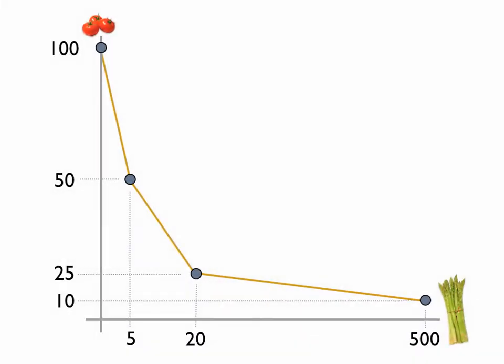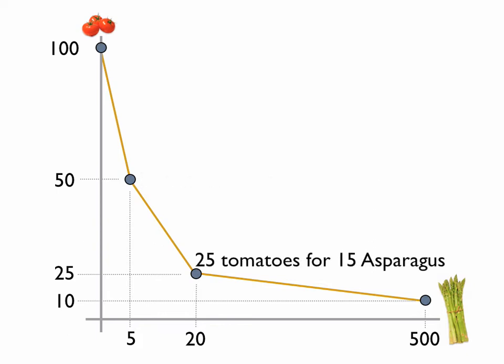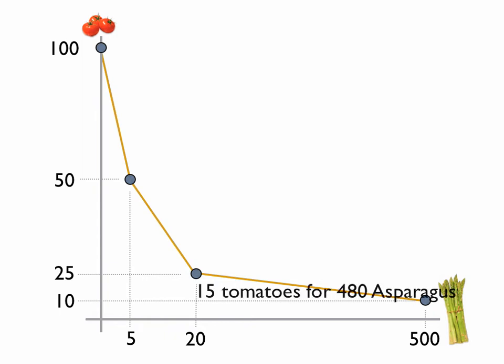Here's an indifference curve, and it shows how a person is willing to trade tomatoes for asparagus. As a person moves from 100 to 50 down the indifference curve, they're willing to give up 50 tomatoes for 5 asparagus. The reason they're willing to do this is because they have a large quantity of tomatoes. As they move downward, they're willing to give up 25 tomatoes for 15 asparagus because they have less tomatoes, so they need more asparagus in return. Until eventually, when they're running low on tomatoes, they have to get back a lot of asparagus to trade any more tomatoes.